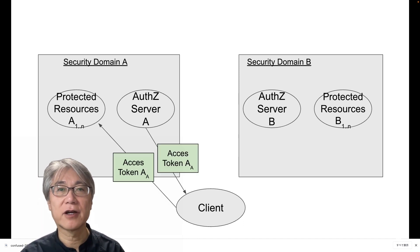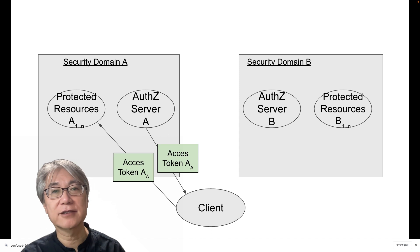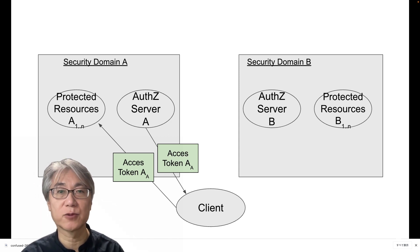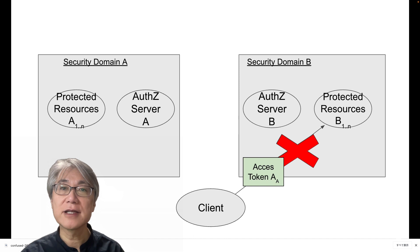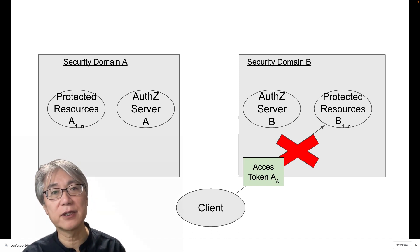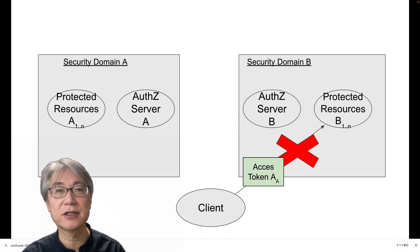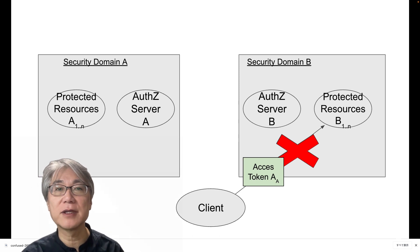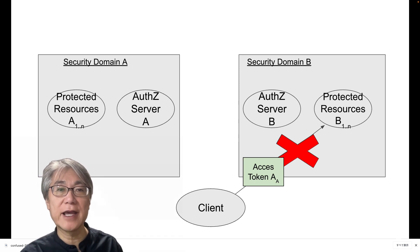The authorization server issues an access token to be used against the protected resources within the domain. This access token obviously cannot be used against another security domain, as it is minted towards the resource servers in security domain A.